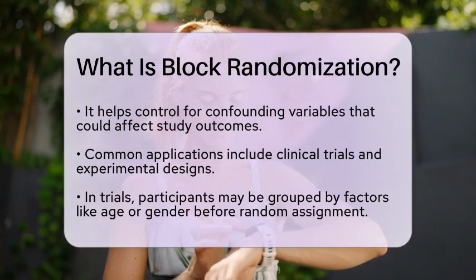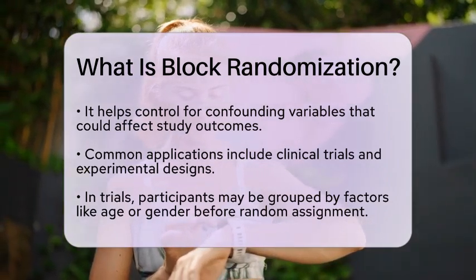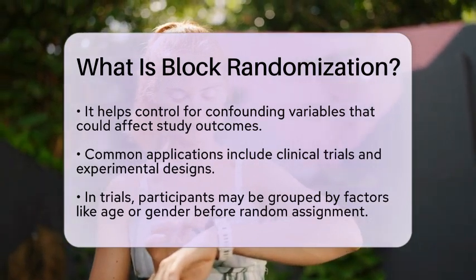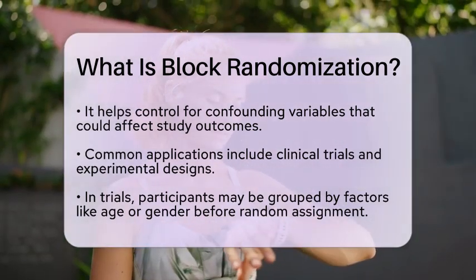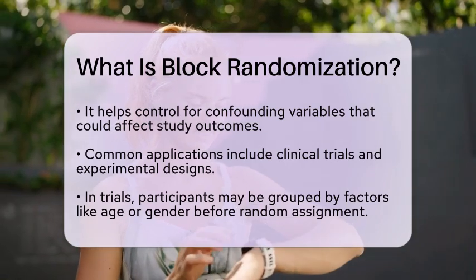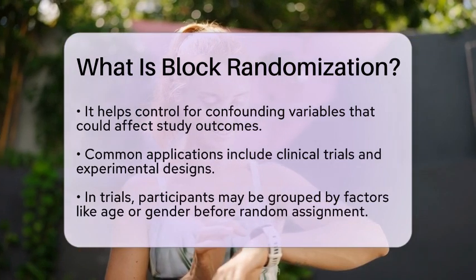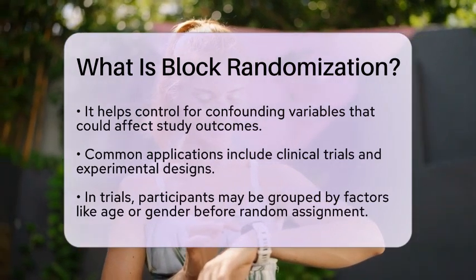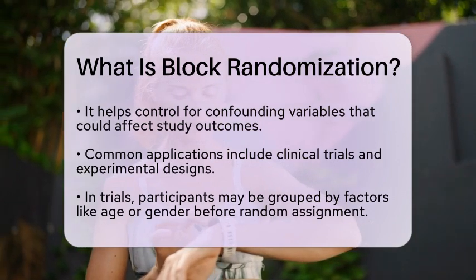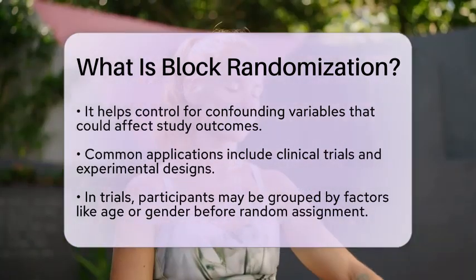You might be wondering where this method is commonly used. Block randomization is often seen in clinical trials and experimental designs. For instance, in a vaccine trial, participants may be divided into blocks based on factors like age or gender. They are then randomly assigned to receive either the vaccine or a placebo. This approach helps ensure that both groups have similar demographic profiles, reducing potential biases.